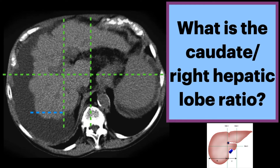The right lobe measurement is along line three from the right liver edge to line one. And lastly, the caudate measurement is along line three between lines one and two. From there, we can calculate the caudate to right hepatic lobe ratio.